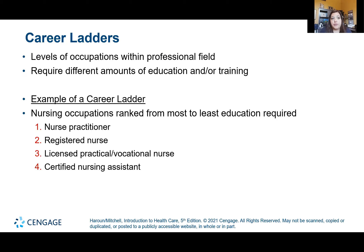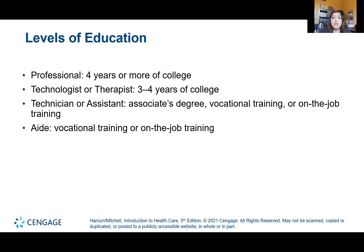Career ladders require different levels of education or training. In nursing, the career ladder starts with a Certified Nurse Assistant, then an LPN which requires about a year of training, a Registered Nurse which requires two to four years, and then a Nurse Practitioner which requires a master's or doctoral degree. Generally, a professional is considered four years or more of college, while a technologist or therapist is three to four years — though a physical therapist requires graduate-level work too.